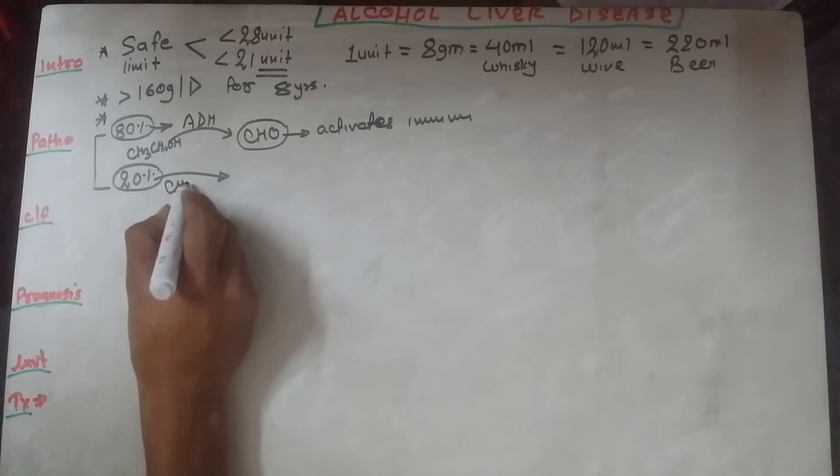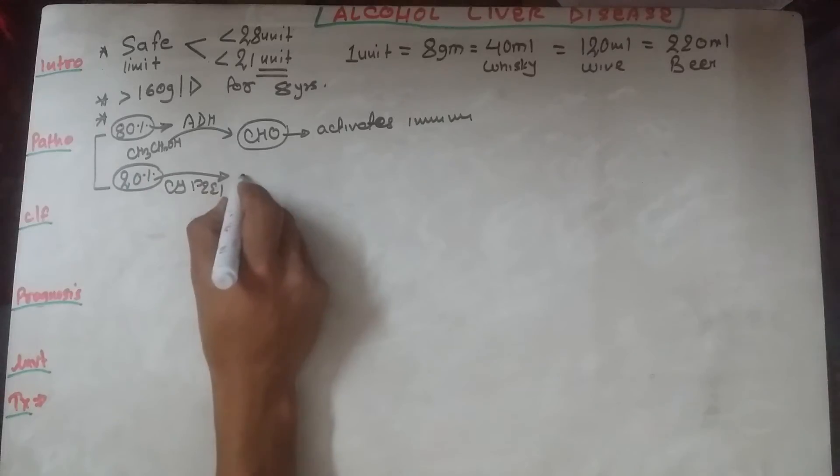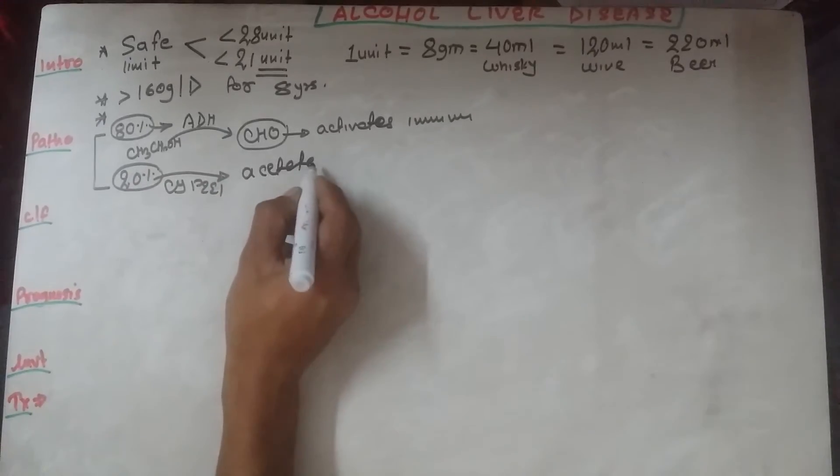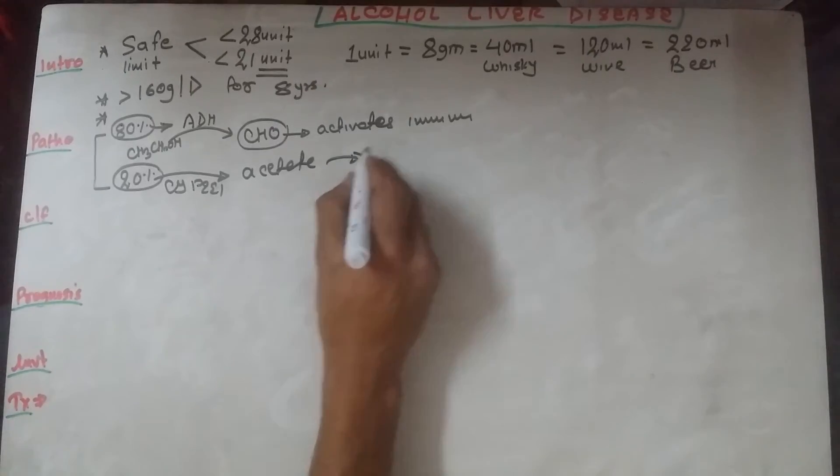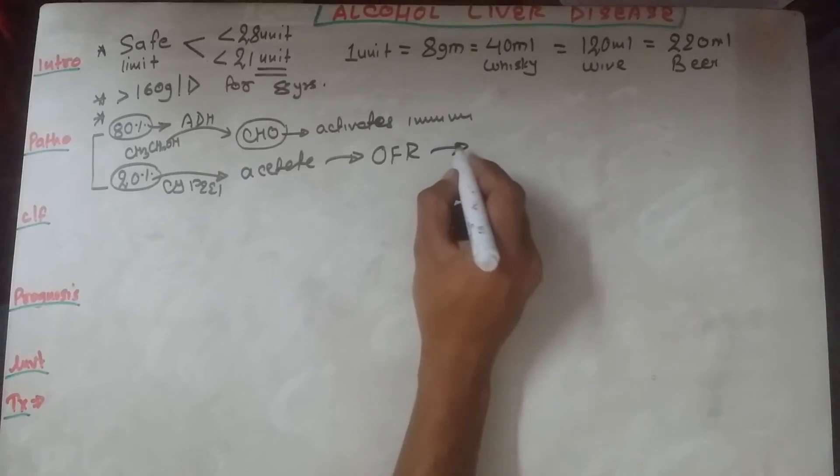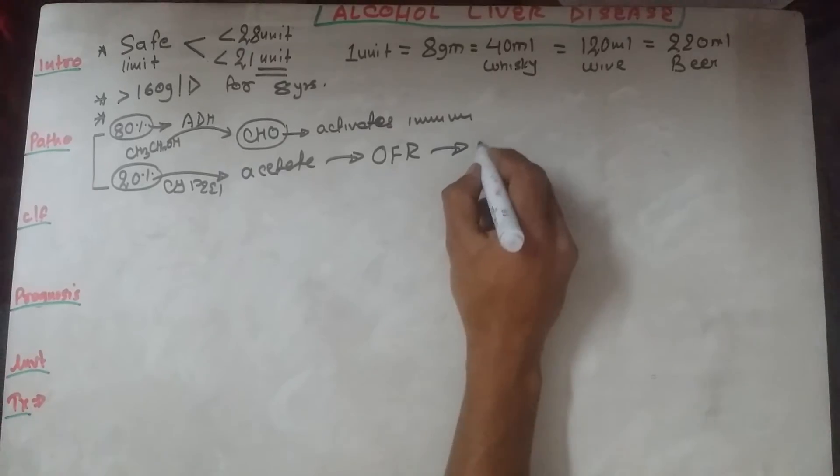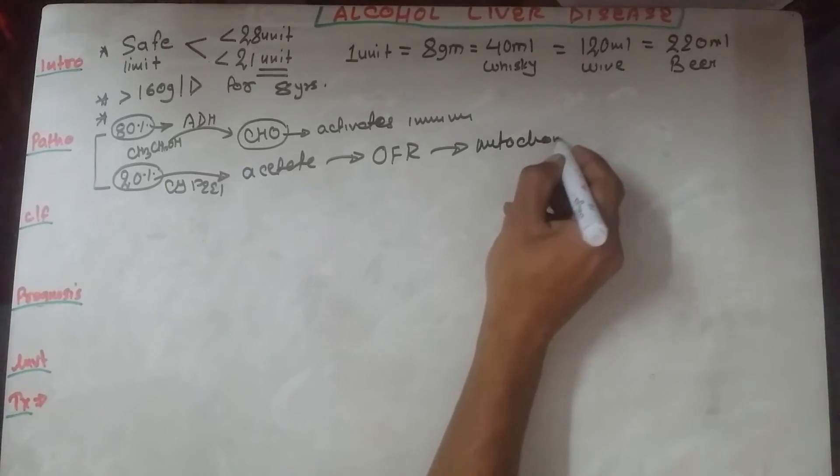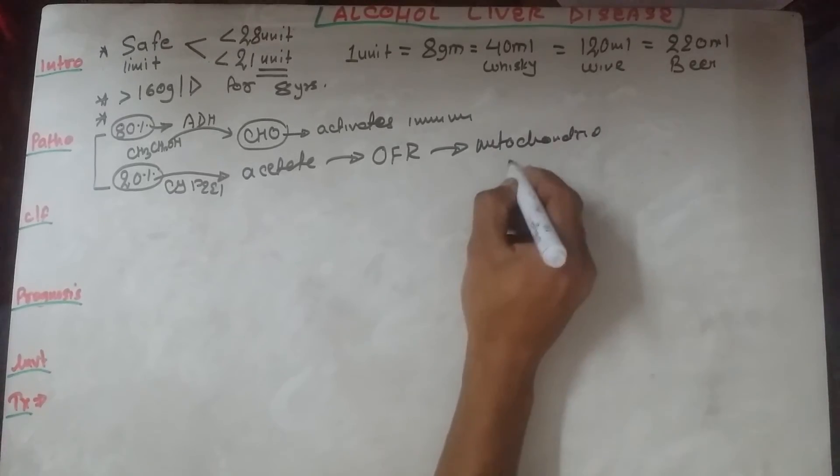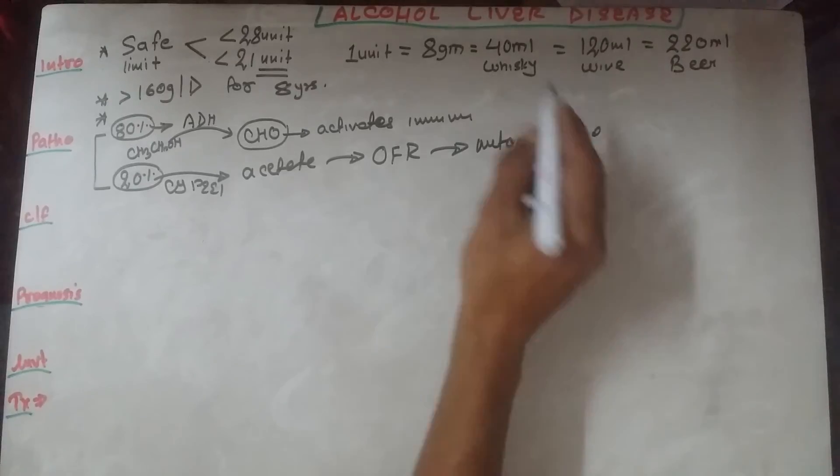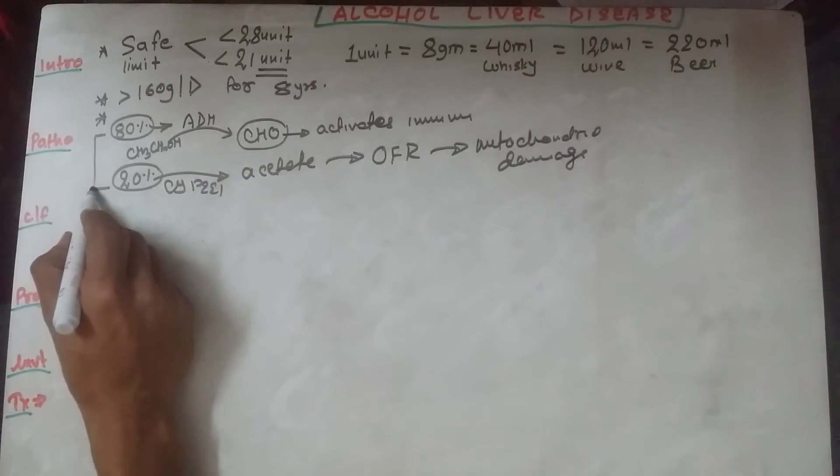The remaining 20% of alcohol gets converted into acetate by cytochrome P2E1. This converts the alcohol into acetate and has the ability to produce oxygen free radicals, which causes mitochondrial damage and results in alcoholic liver disease.